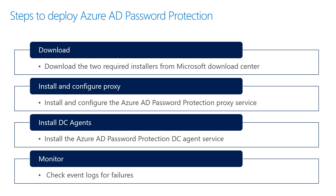The ordering of which agent should be installed first does not matter. Additionally, you will also need to register the forest, since this is a per-forest configuration. An important point to keep in mind is that the DC agent service always uses the most recent locally available password policy to evaluate a user's password. If no password policy is available on the local DC — either due to a failure or because an older version of the DC agent has expired — then the password is automatically accepted, and an event message is logged to warn the administrator.